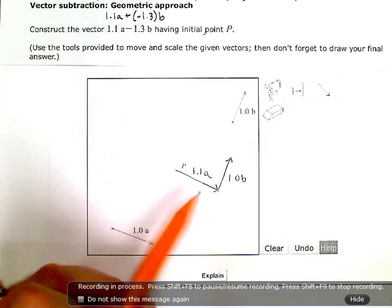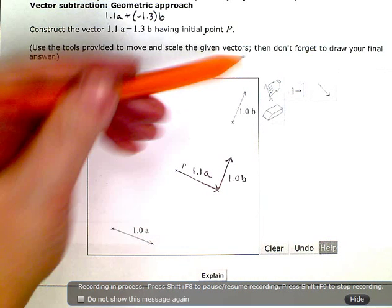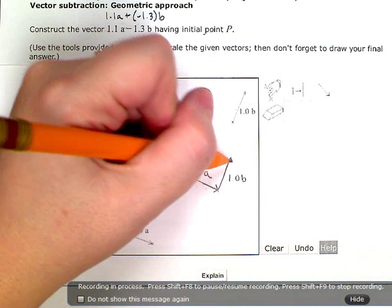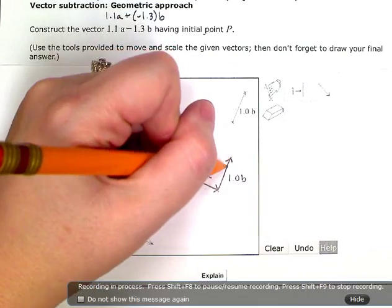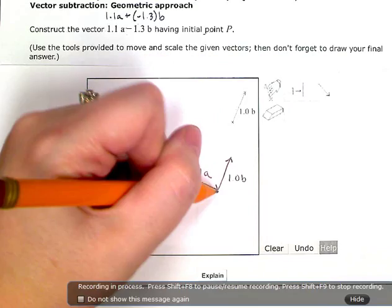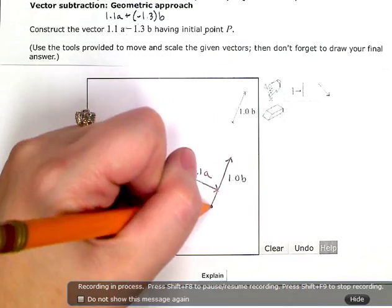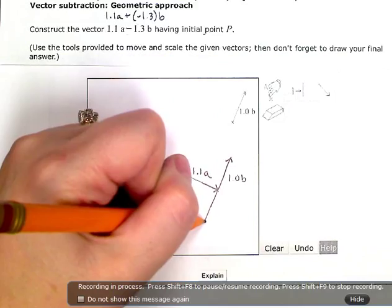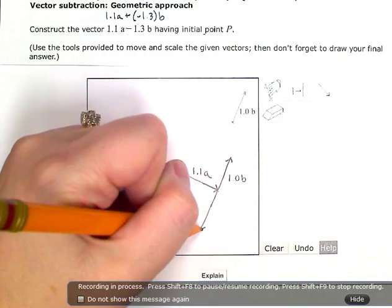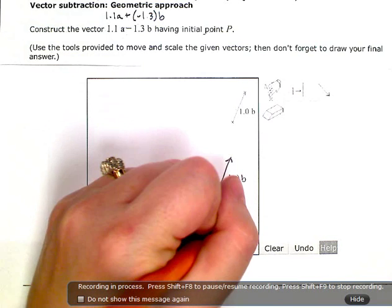So I'm just going to take this vector now using this tool, and you're going to grab the tip and shrink it down. And then for the negative part, you're actually going to stretch the vector out in the opposite direction until you get a magnitude of negative 1.3 for the b vector.